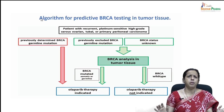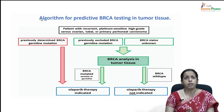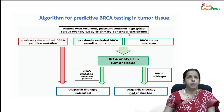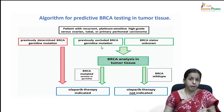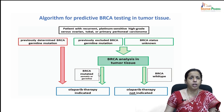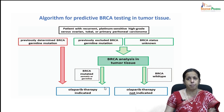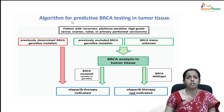This is a simple algorithm recommended by national cancer societies for predictive BRCA testing in a tumor. Patients with recurrent high-grade serious peritoneal, tubal or primary peritoneal carcinoma are considered for olaparib maintenance therapy. Patients with unknown BRCA status or who tested negative for germline BRCA mutation may still qualify. Patients who have previously been tested positive for germline BRCA mutations are eligible for therapy and do not need further testing.